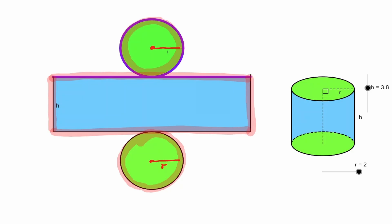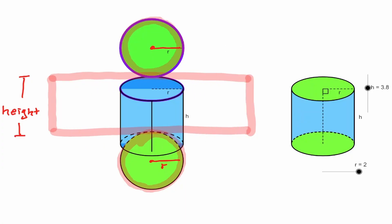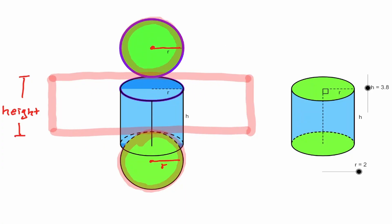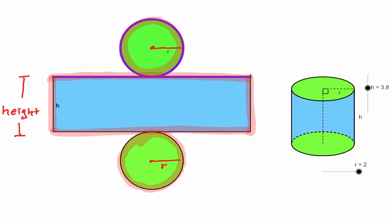One of the sides of this rectangle is the height of the cylinder. But how can we define the other side of this rectangle? Notice that it's the circumference of the circle that we have on the base.